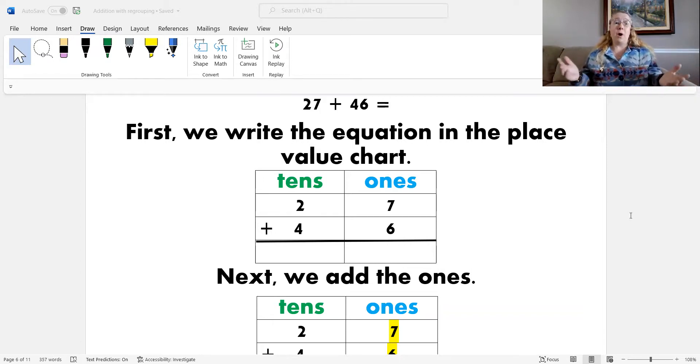So, we solved the problem 27 plus 46. What was the first thing we did? Yeah, the first step to solving these types of problems is to write the equation into the place value chart. So, we wrote that down.